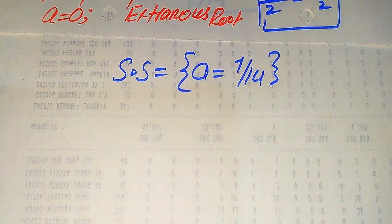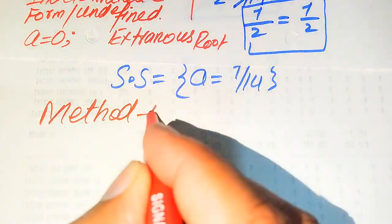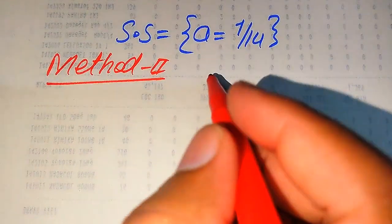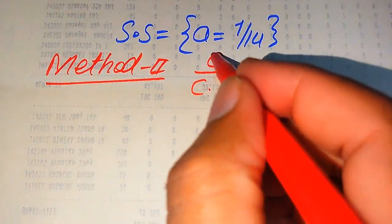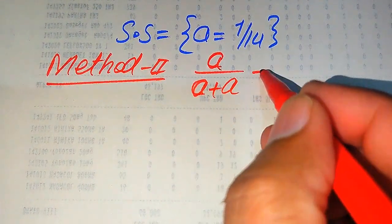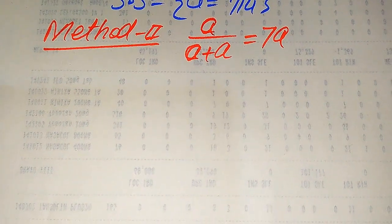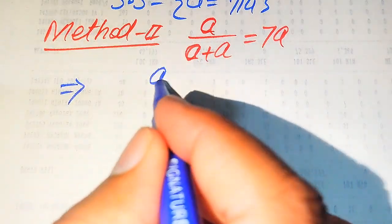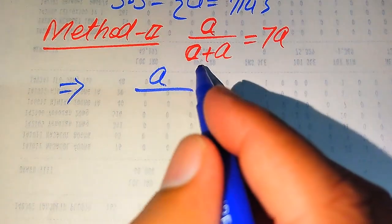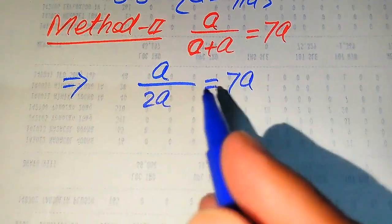Now we solve this problem using the second method. We copy down the given question statement: a divided by a plus a equals seven times of a. Here I will give you a smarter technique to easily get the value of a. We have a divided by a plus a, where a plus a is 2 times of a, so this becomes a divided by 2a equals 7a.